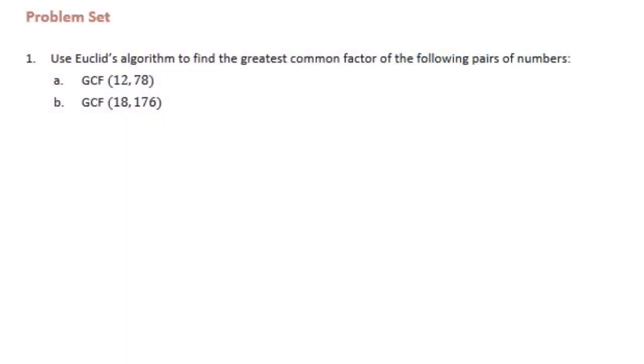Sixth grade, module 2, lesson 19, problem set. Number 1, use Euclid's algorithm to find the greatest common factor of the following pairs of numbers. Let's start with 12 and 78.